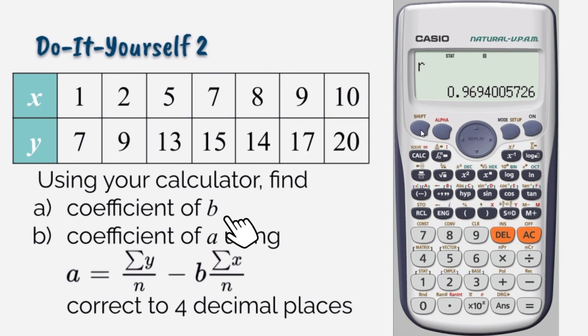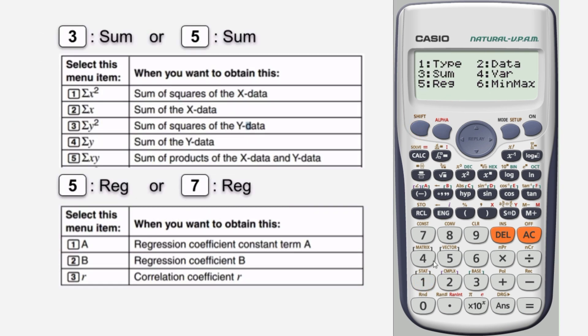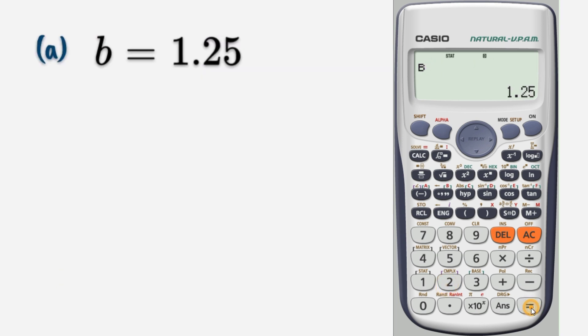Using the same data, let's find the coefficient B correct to four decimal places. Press SHIFT, press 1, press 5 or 7, then press 2. Press equals for the value and B is 1.25.